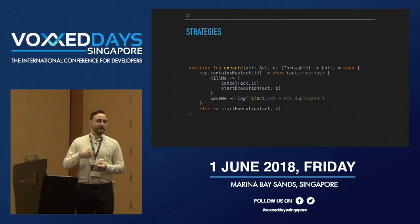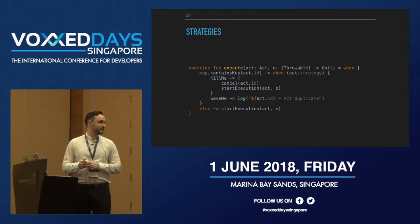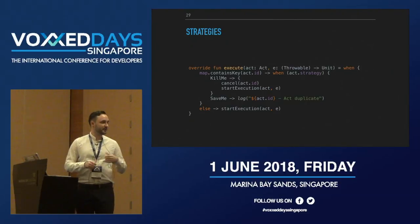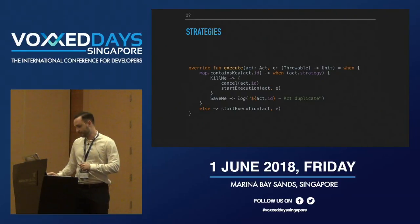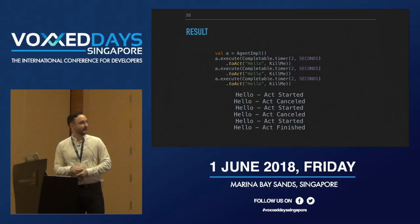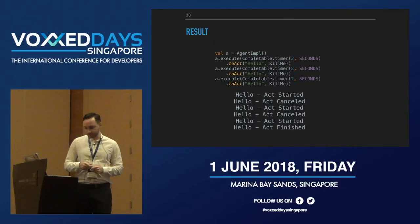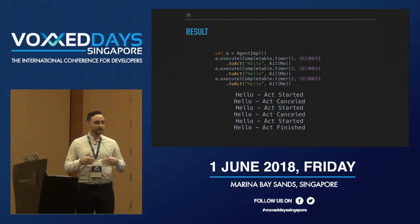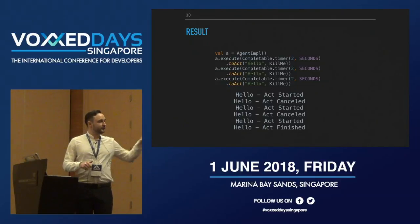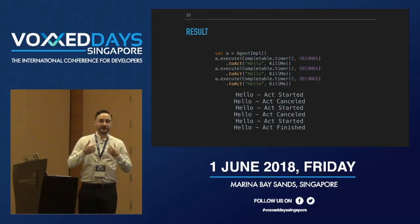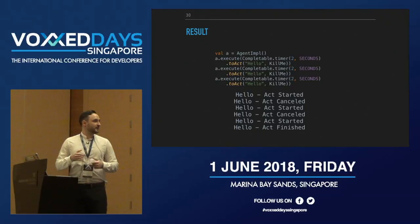In the updated implementation of execute, we check if the map contains the key — if it does, we check the strategy: for KillMe we cancel the current execution and start a new one; for SaveMe we just log that this is a duplicated job. If the map doesn't contain anything, we start execution for the first time. In our updated example, all Completables implement the KillMe strategy, meaning the last one wins. In logs we can see the first two are started and cancelled, and only the third one finishes.